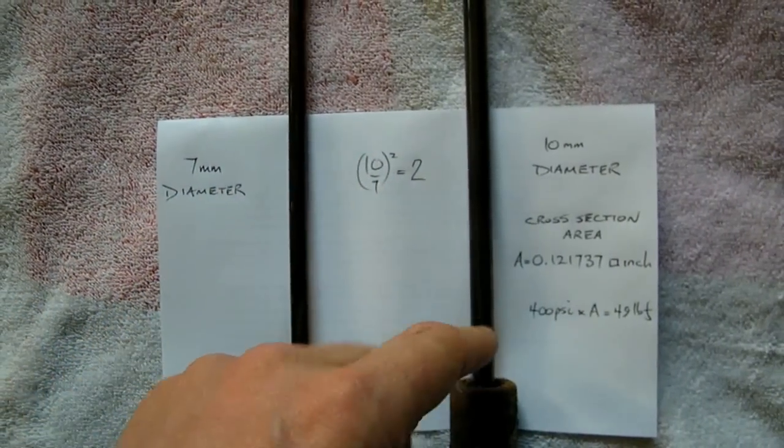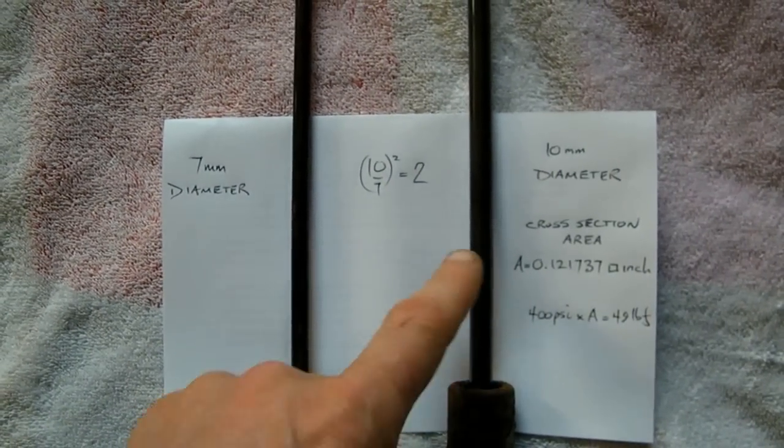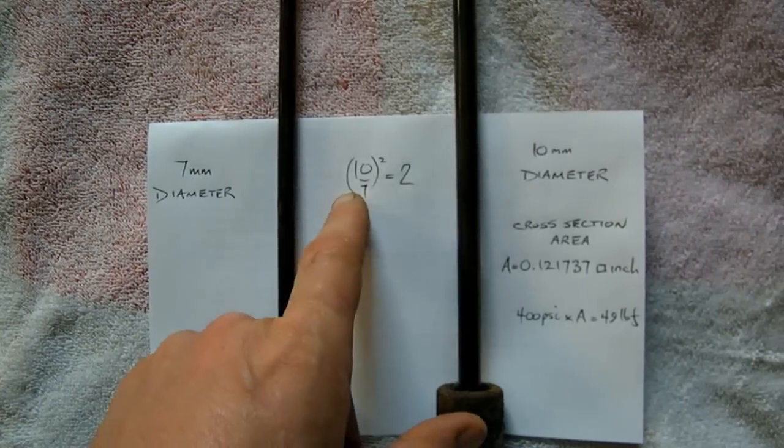10 over 7 squared equals 2. So for the same pressure in these cylinders the minivan gas spring can provide twice the lifting force.